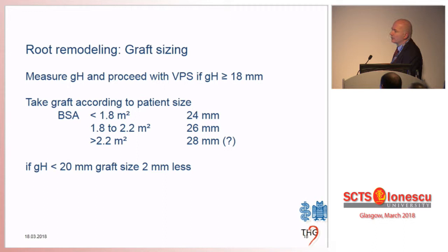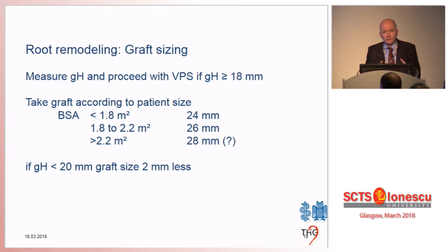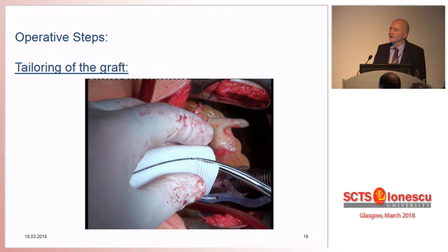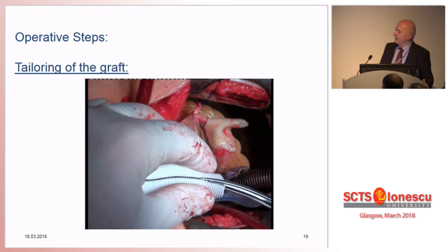A few years ago I decided I rarely needed a 28 millimeter graft. Because root size and cusp size must correlate — a smaller valve needs a smaller root to really generate valve function. If geometric height is less than 20 millimeters, I simply take one size less, two millimeters less. This is so simple that even I can remember it.